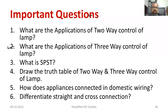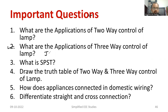What are the applications of three-way control of lamp? Three-way control of lamp is mainly suitable for the long corridor. Some buildings which have a long corridor, especially in the jail. It is also known as jail wiring.